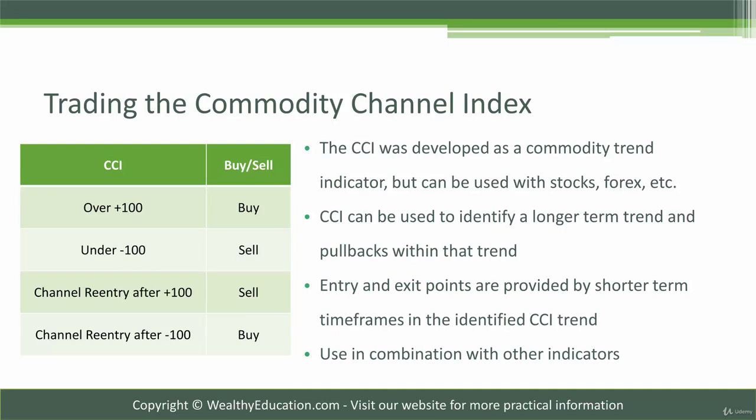The CCI was developed originally as a commodity trend indicator, but it can also be used with stocks, Forex, etc. CCI is used to identify a longer term trend and then pullbacks within that trend. The trend can be either bullish or bearish. CCI can then provide entry and exit points within the trend. So if we have a bullish trend and a pullback, CCI helps identify the pullbacks and where to enter the trade from a bullish perspective, and just the opposite with a bearish trend.